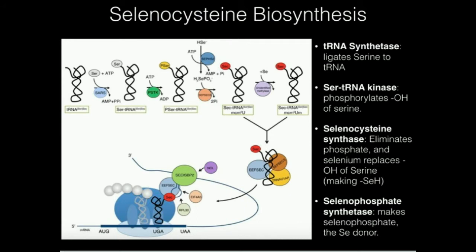Right here we have a specific tRNA — a tRNA that normally is going to recognize serine. Although there are some differences between the normal serine tRNA and this one, initially notice that this tRNA synthetase is going to react with this tRNA and serine, and it's going to ligate serine onto the tRNA. So that's going to be our building block.